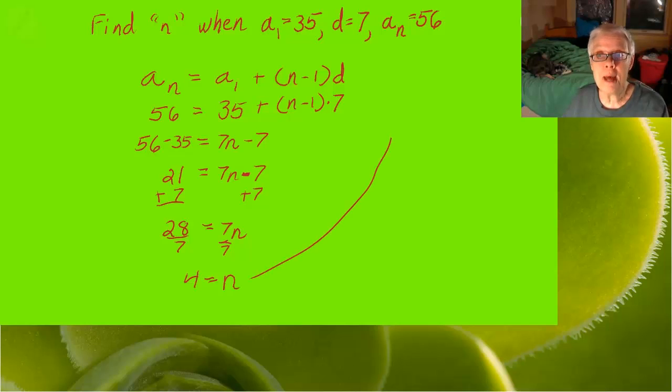And what that means is that a sub n is really a sub 4. It's the fourth term. 56 is the fourth term of our arithmetic sequence.